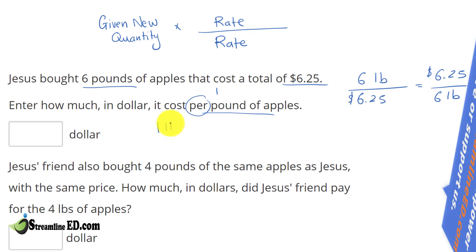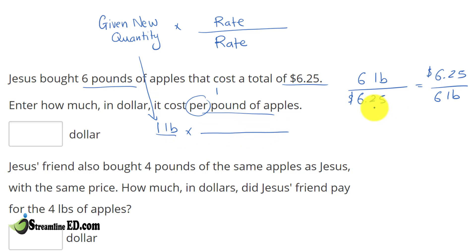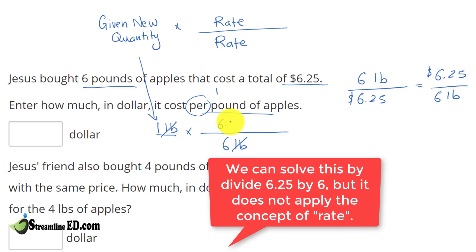I have 1 pound of apple — that's our new condition right there. Since the unit is pounds, when we look at our ratio, we are going to use the one that has pound on the bottom. We have 6 pounds of apple, so that the pound can cancel out and give us $6.25.